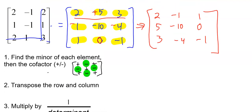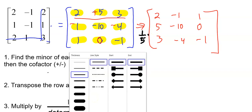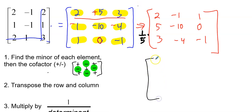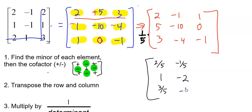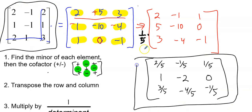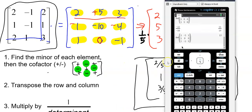So we multiply our transposed cofactor matrix by 1 fifth. The answer should be: 2/5, 5/5 = 1, 3/5, negative 1/5, negative 10/5 = negative 2, negative 4/5, 1/5, 0, and negative 1/5. To check this on the test, you can multiply the original matrix by this inverse matrix by hand and verify you get the identity matrix.